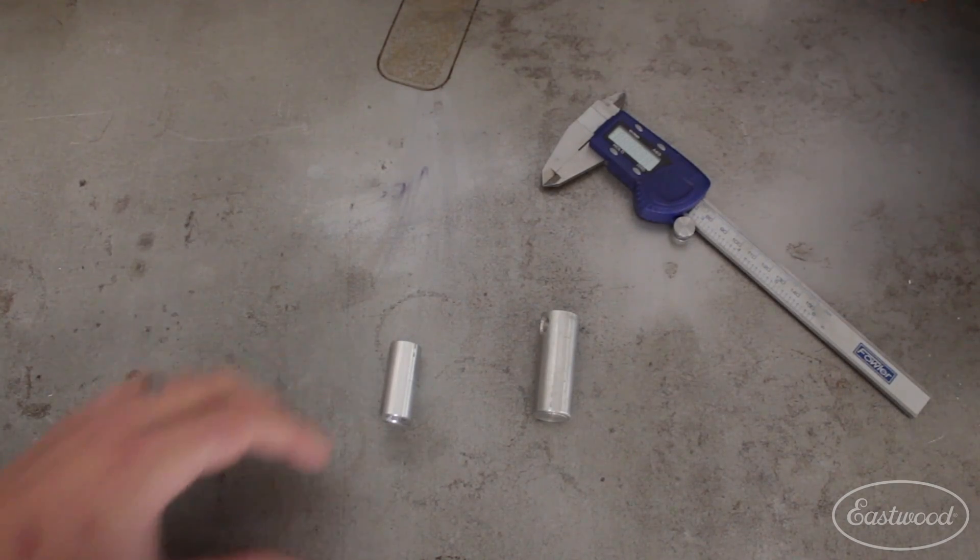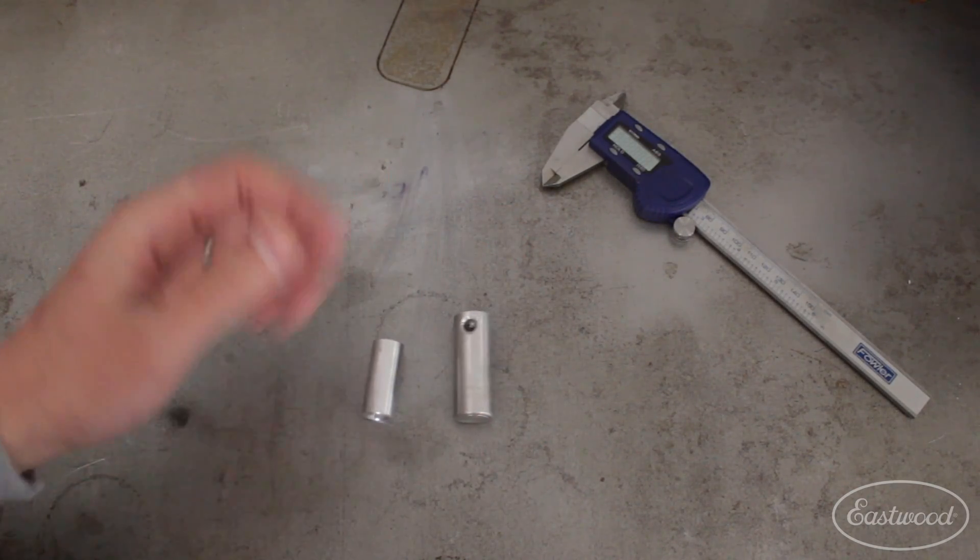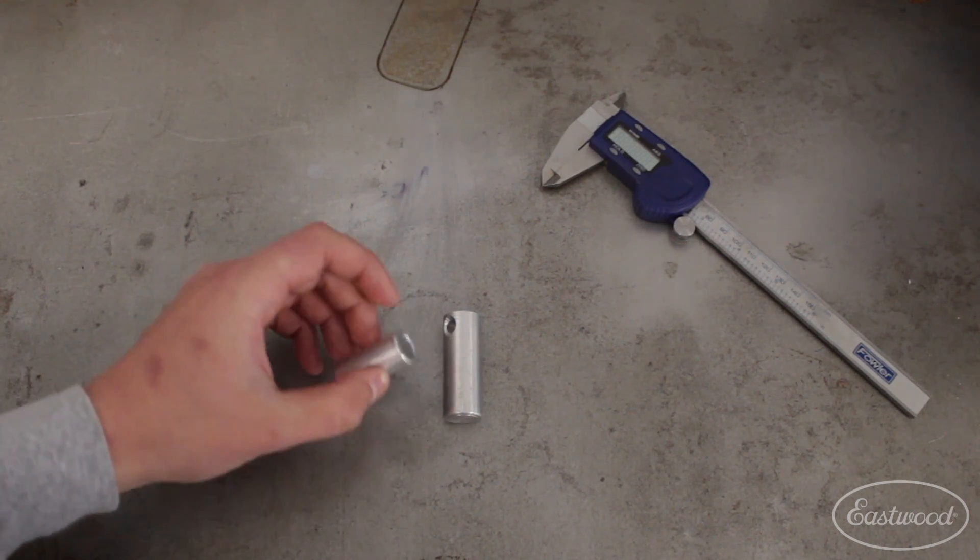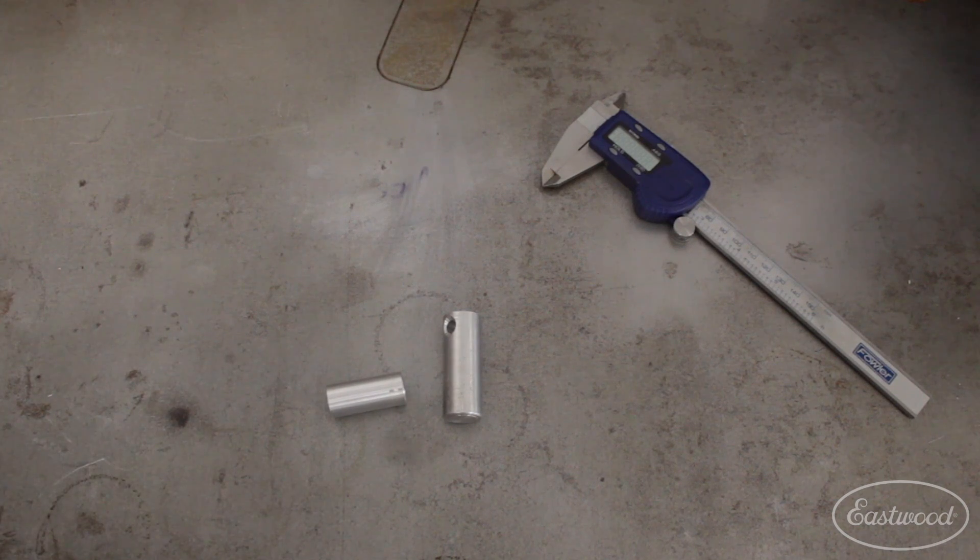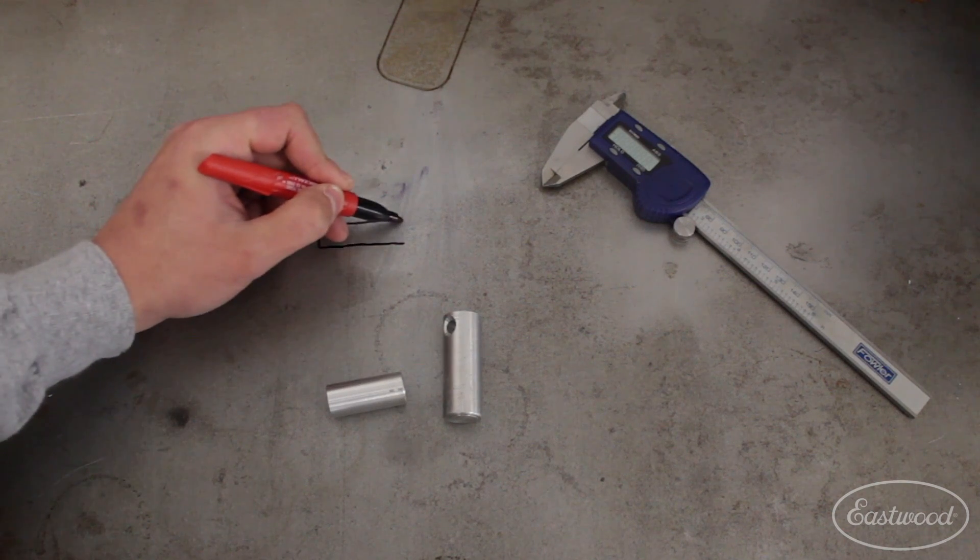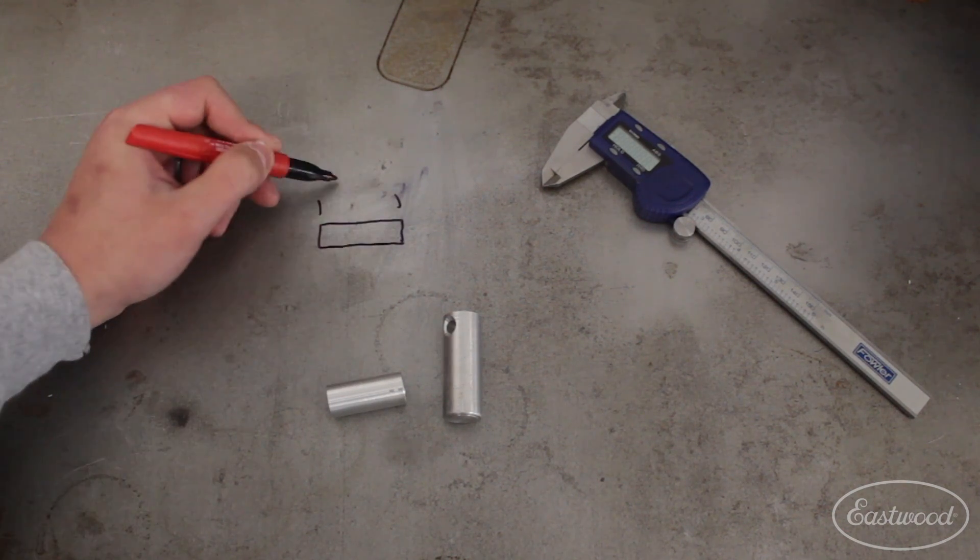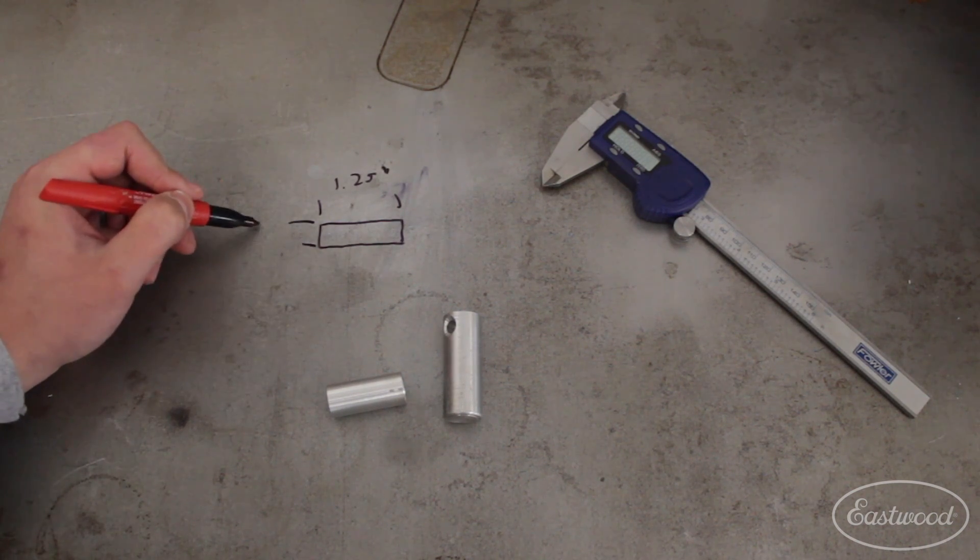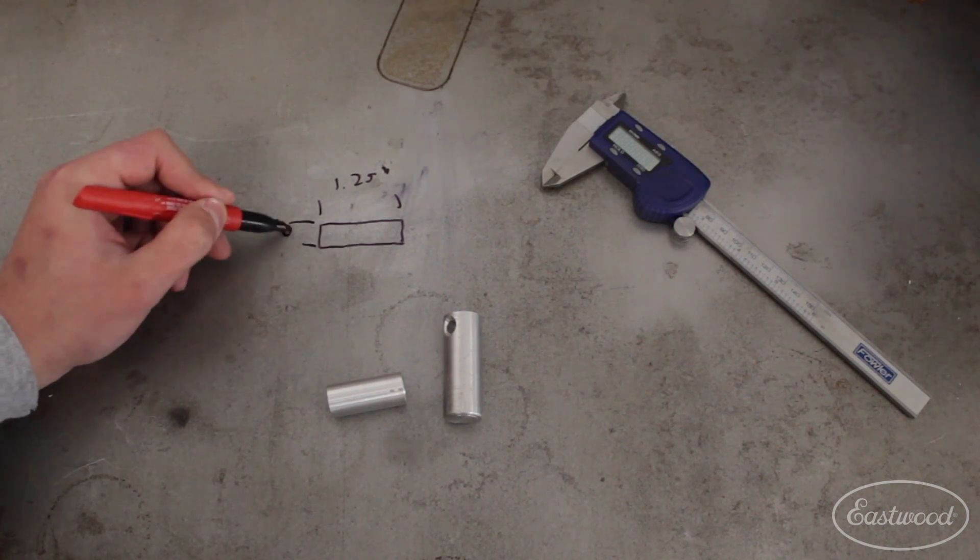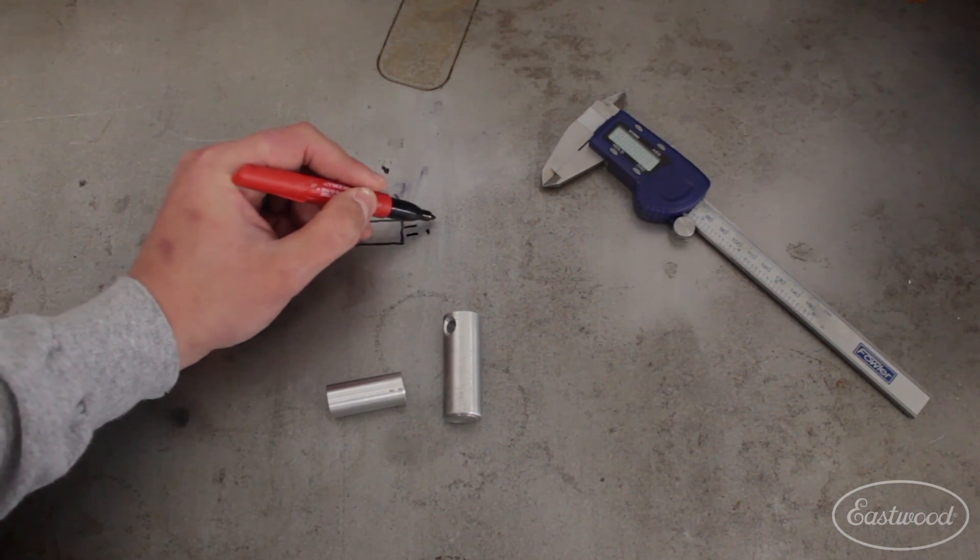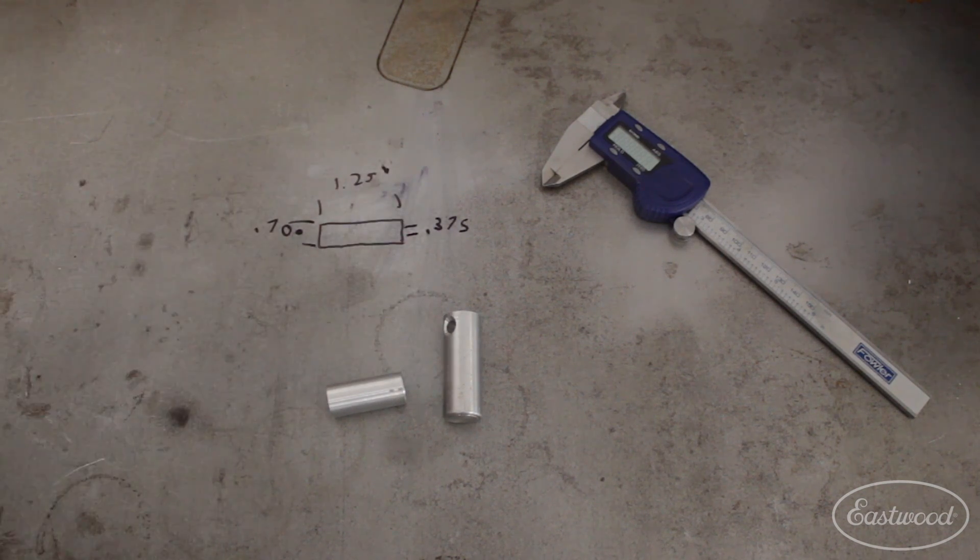All right guys, so the plan is to start with this nice chunk of aluminum. Found that in scrap from R&D. We're gonna make ourselves a nice finished spacer like this. It's gonna be a slightly different size. We're gonna go for something that's inch and a quarter. We're gonna go 0.700 on the OD and then for our bore we're gonna do a 3/8. Be pretty straightforward. Be pretty easy.